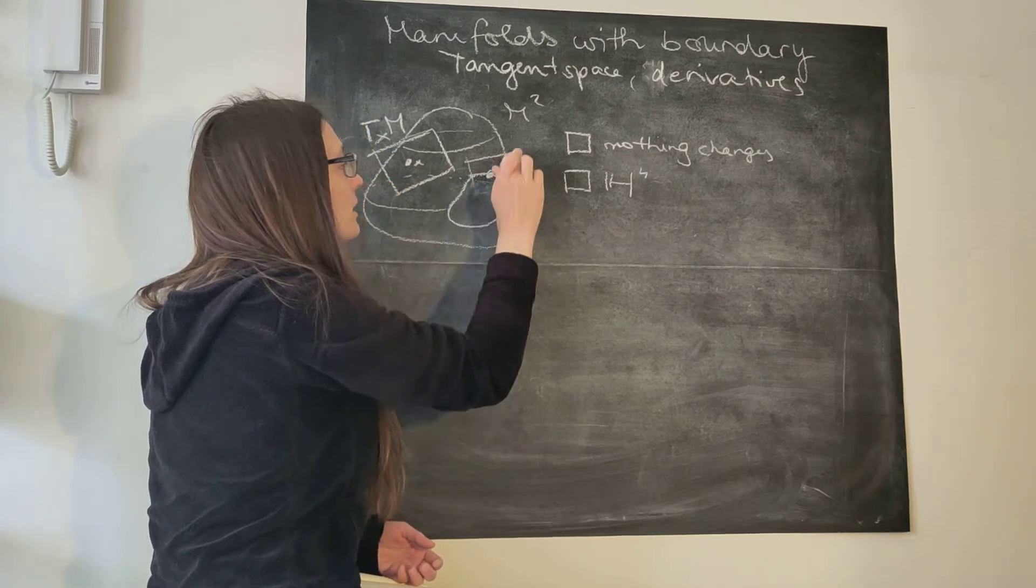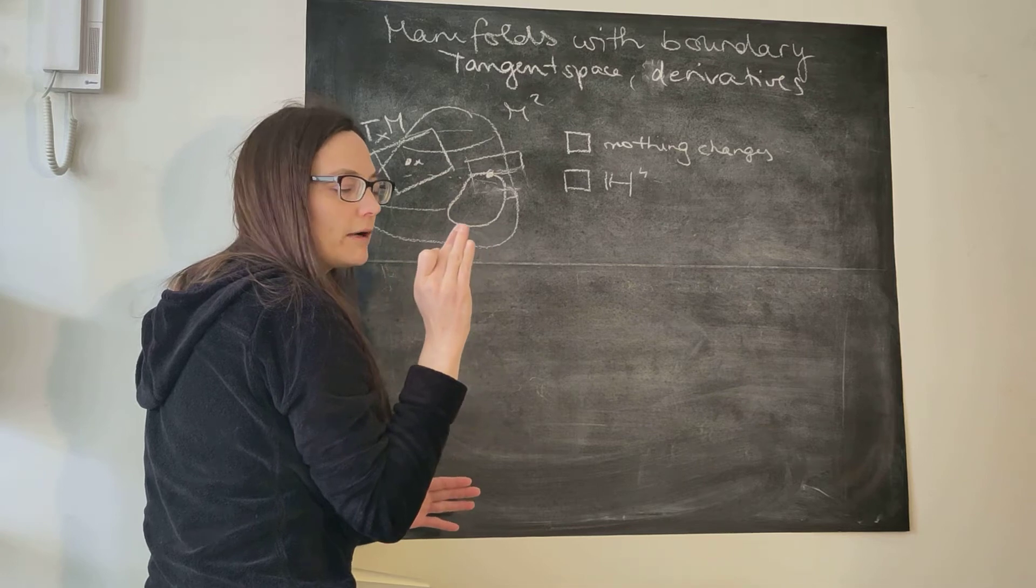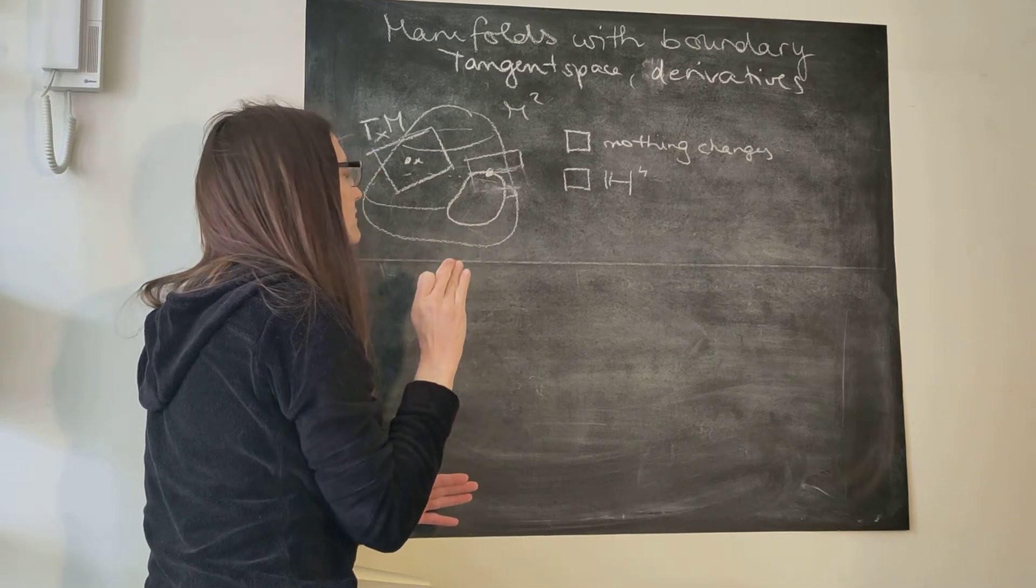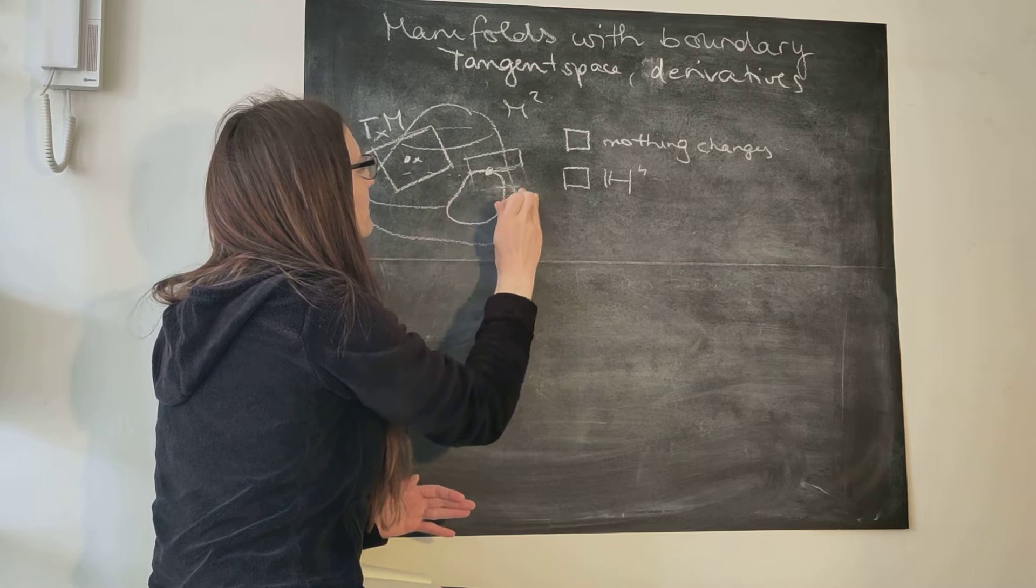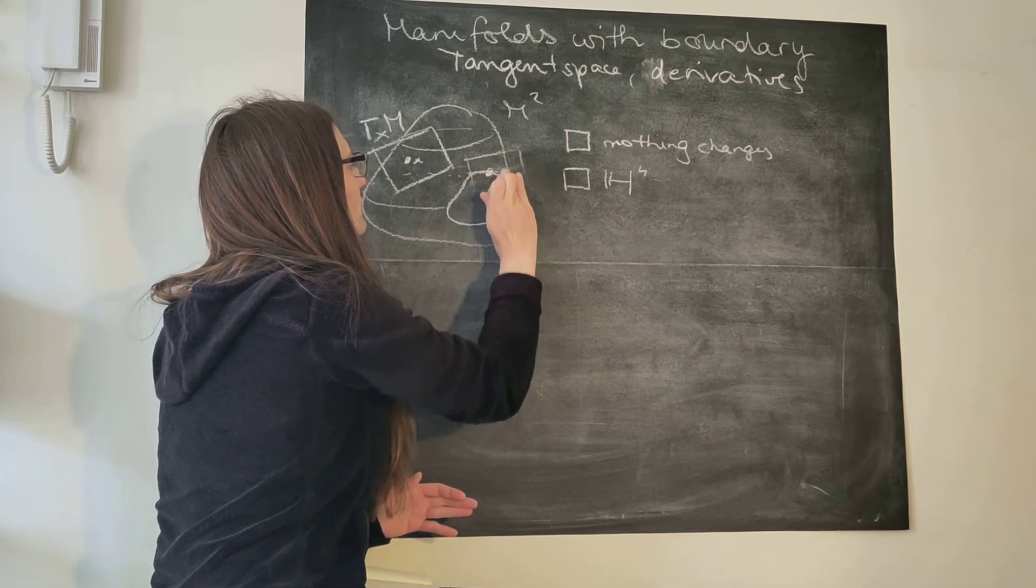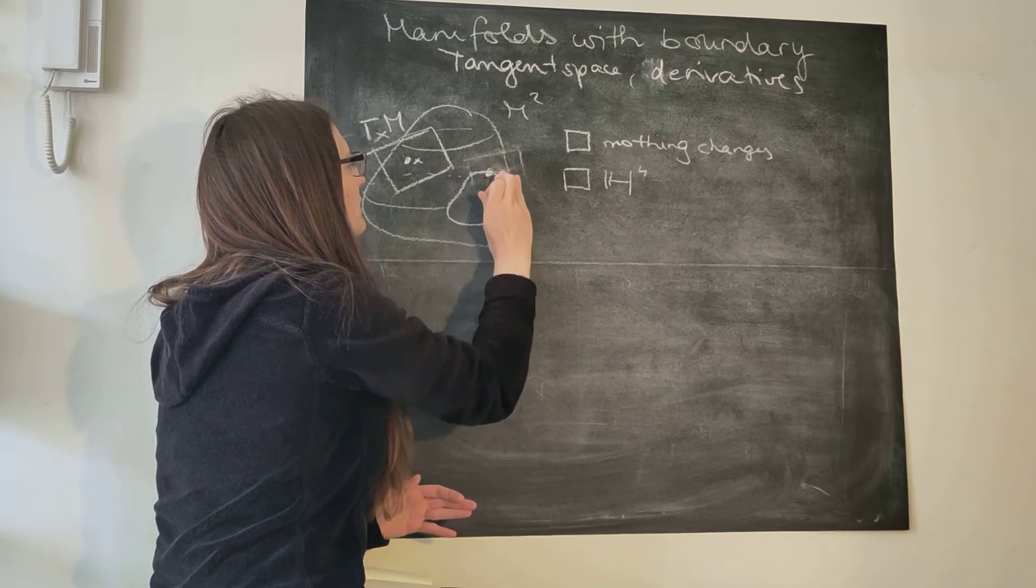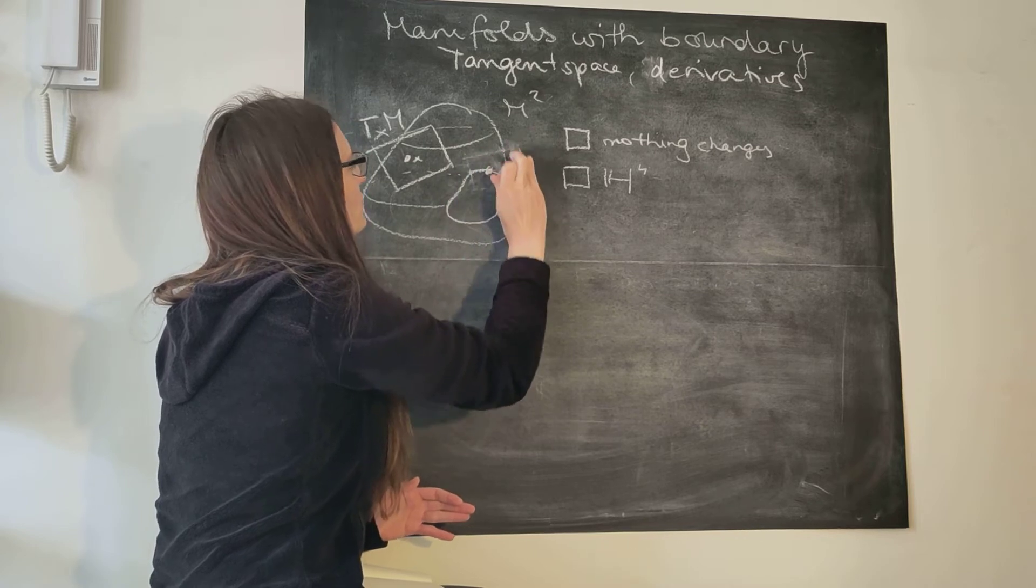Or do you think, wait, half planes, I don't like half planes and this doesn't make sense. What is this? Tangent spaces are about the directions, directions don't just stop.